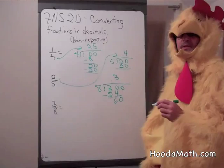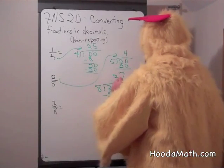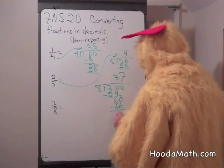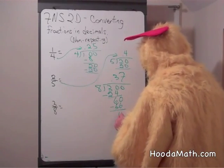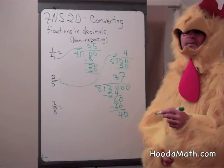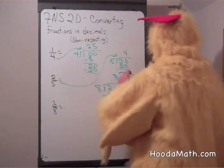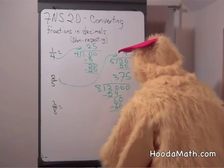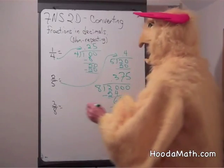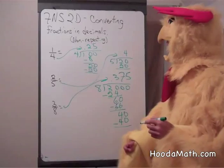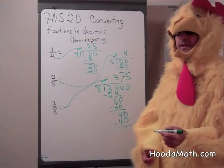Eight goes into sixty about seven times. Seven times eight is fifty-six. The remainder is four. And another zero. Eight goes into forty how many times? That's right, five times. It goes in evenly. Five times eight is forty. So our fraction can be converted into the decimal three hundred seventy-five thousandths.